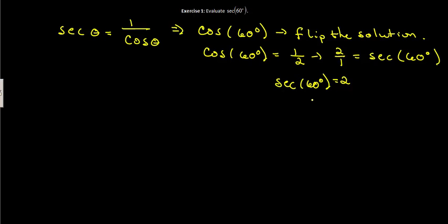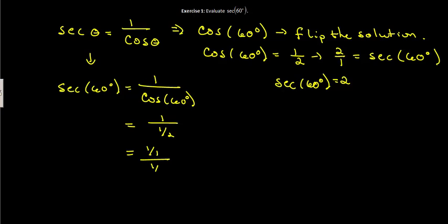You're going to get the same answer regardless of how you think about it. If we take the secant of 60 degrees, it should be equal to 1 over the cosine of 60 degrees, which is 1 over 1 half. And when you have a fraction divided by another fraction, remember 1 can be rewritten—we could write it as 1 over 1 divided by 1 half.